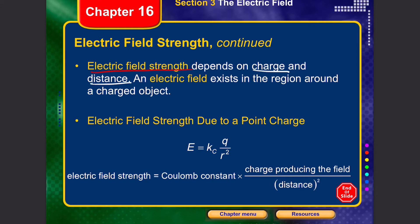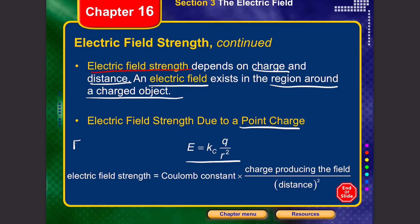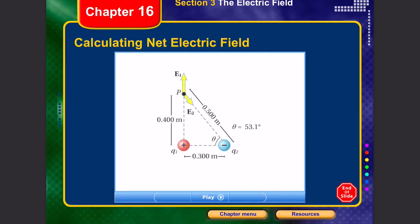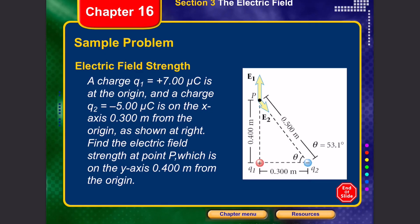The electric field strength depends on the charge and the distance, and an electric field exists in the region around the charged object. The electric field strength due to a point charge can be written as E = kc·q / r². We know that F = kc·q·q₀ / r², and since E = F / q₀, the q₀ cancels, giving us E = kc·q / r².